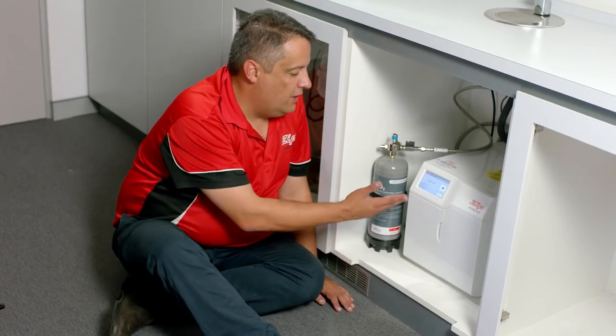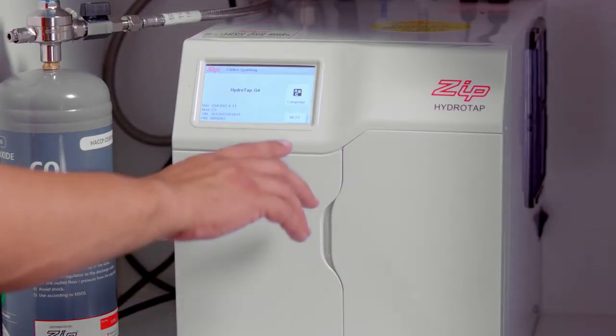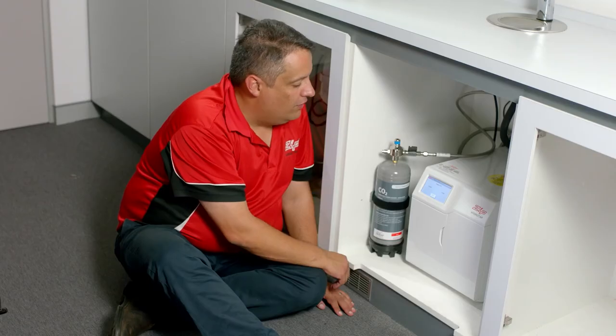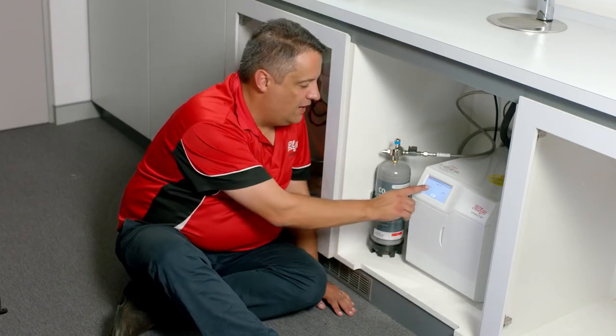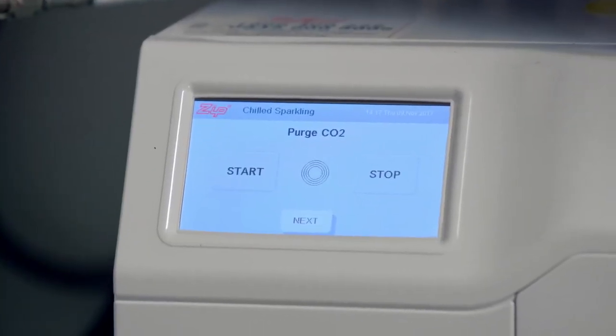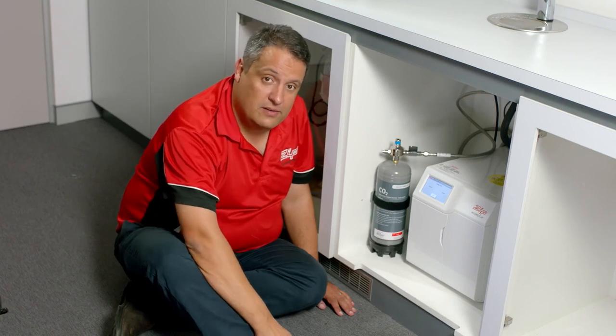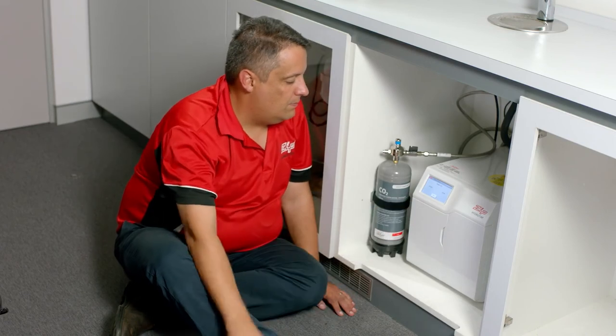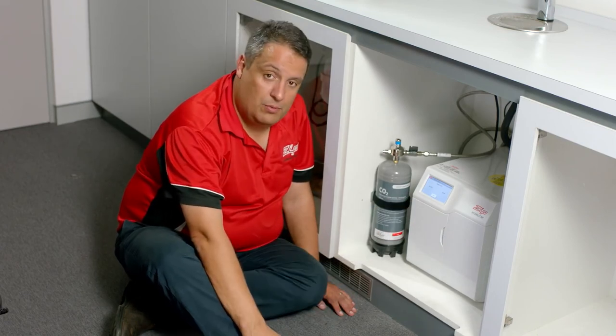Once the power's turned on to your HydroTap, the first screen asks you which language would you like. I prefer English. Press next. It then asks you to do a CO2 purge. On the screen, press start. You will hear gas escape the tap. Wait for 10 seconds and press stop. Press next.